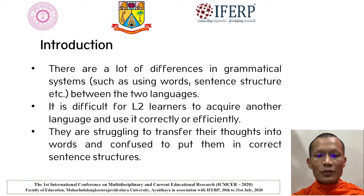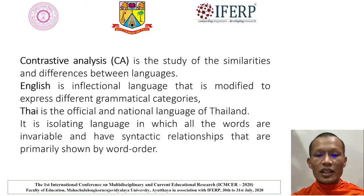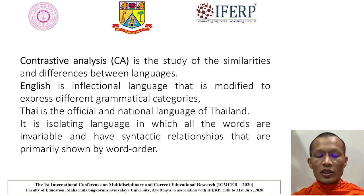Introduction. There are a lot of differences in grammatical systems between the two languages. It's difficult for second language learners to acquire another language and use it correctly and efficiently. They are struggling to transfer their thoughts into words and confused to put them in correct sentence structures. Contrastive Analysis is the study of the similarities and differences between languages. English is an inflectional language that is modified to express different grammatical categories. Thai language is the official and national language of Thailand. It is an isolating language in which all the words are invariable and have syntactic relationships that are primarily shown by word order.